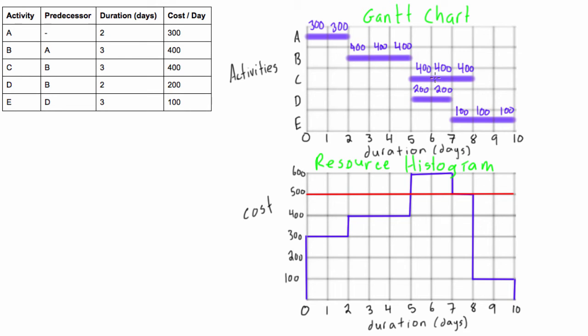So anyways, activity C here is not on the critical path. So what we want to do is, that means we're able to move this without, so without extending the entire duration of the project, we could move this over two days, right? Because if activity C finishes on day 10, that's okay, because the whole project will still finish on day 10. So what we want to do is, let's do that, let's draw its position here for the late, for its late start and late finish.